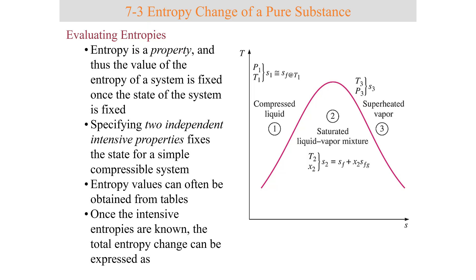Entropy is a property, and thus the value of the entropy of a system is fixed once the state of the system is fixed. By specifying two independent intensive properties, you fix the state for a simple compressed system. Similar to before, if you were to go to the tables or use EES, you can actually find the value of the entropy of the system as you would find any other property.